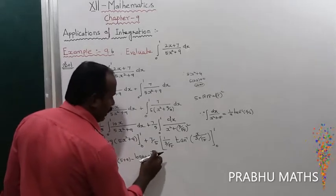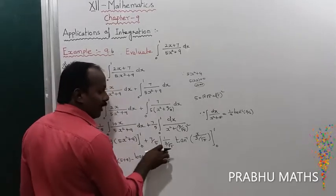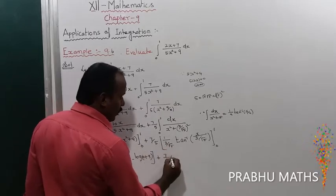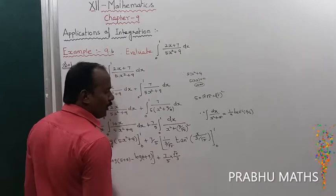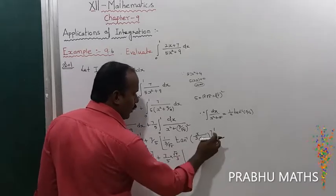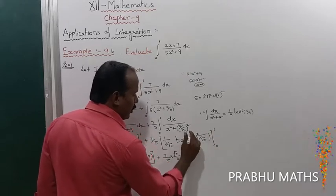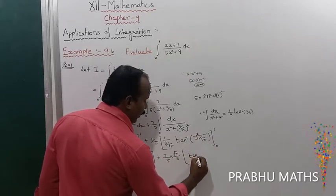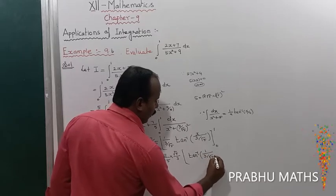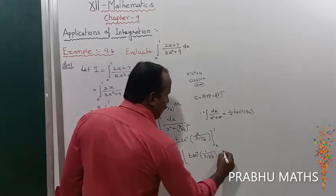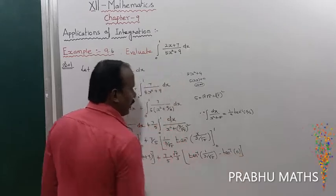Second term: (7/5) · (√5/3) · [tan⁻¹(1 ÷ (3/√5)) − tan⁻¹(0)]. Upper limit gives tan⁻¹(√5/3), and tan⁻¹(0) = 0. So the second term is (7√5/15)·tan⁻¹(√5/3).